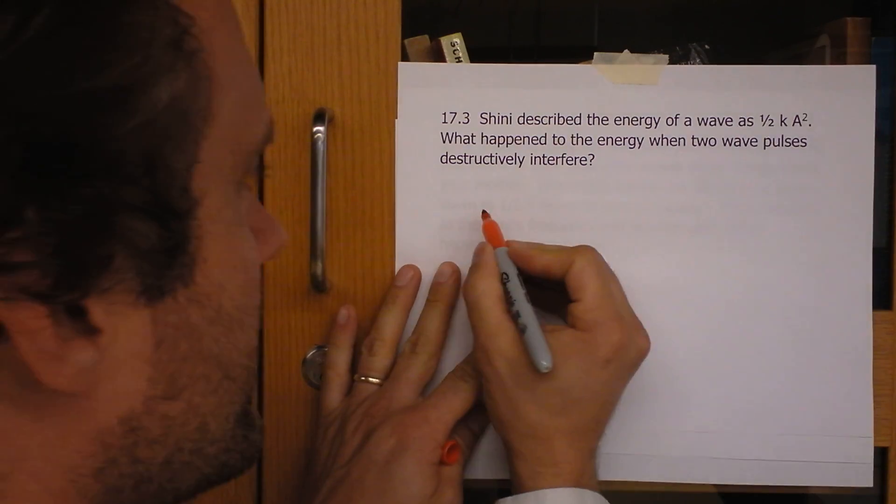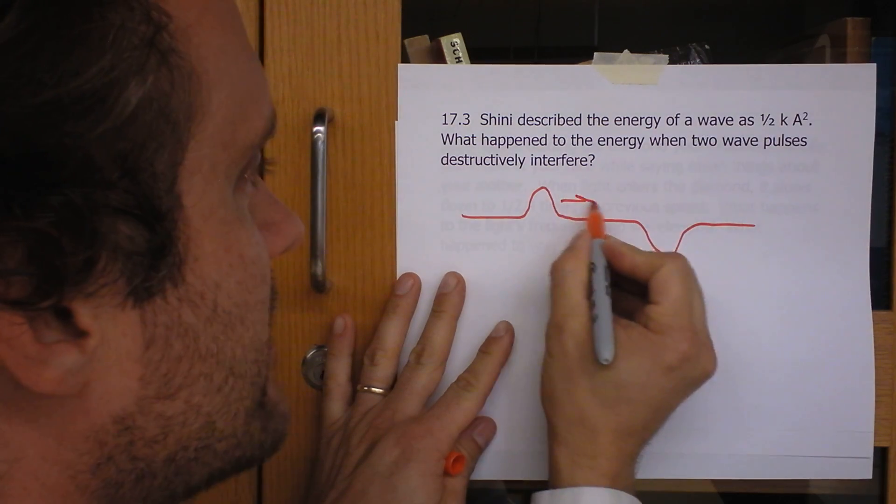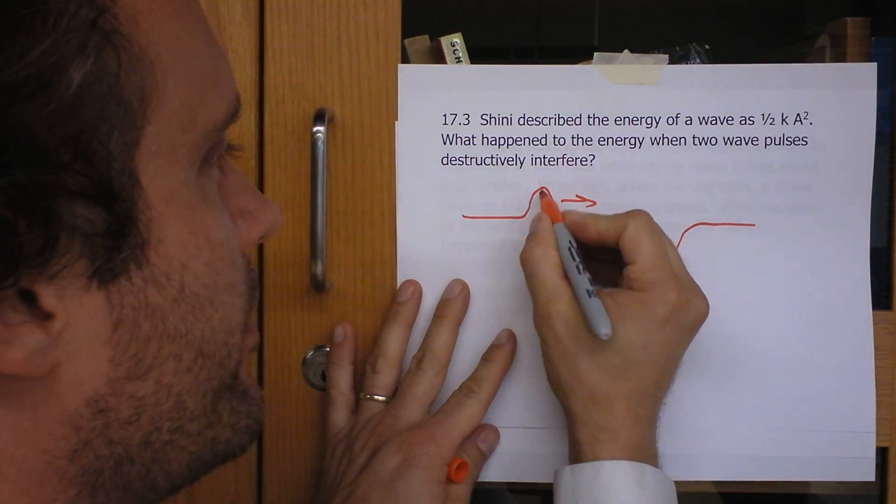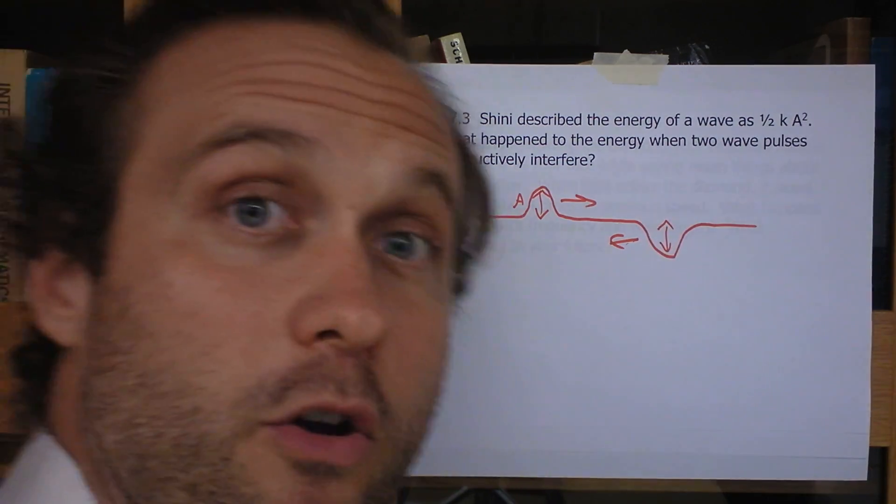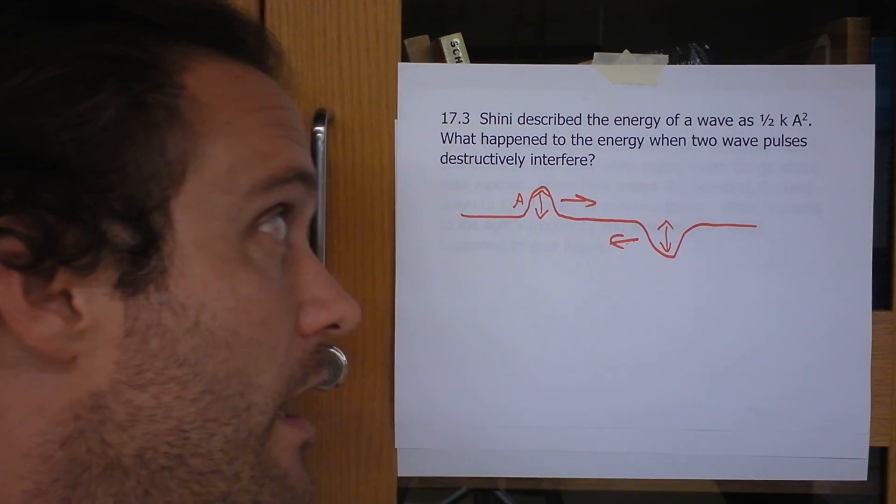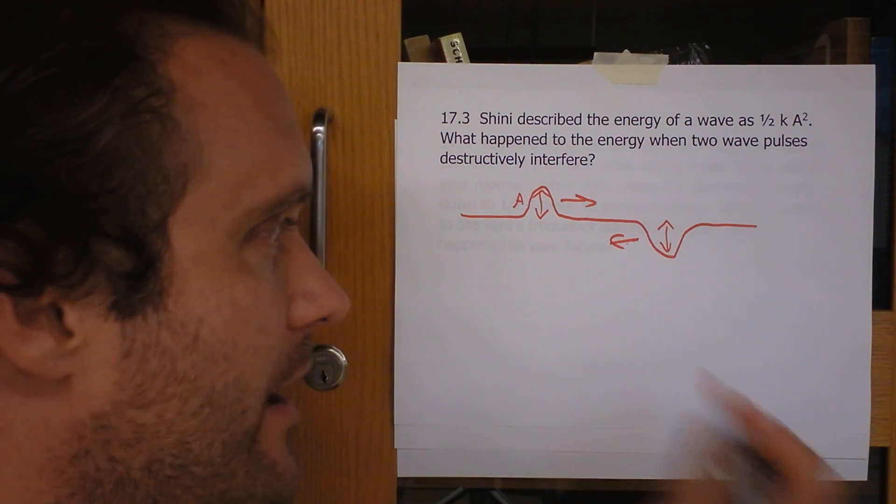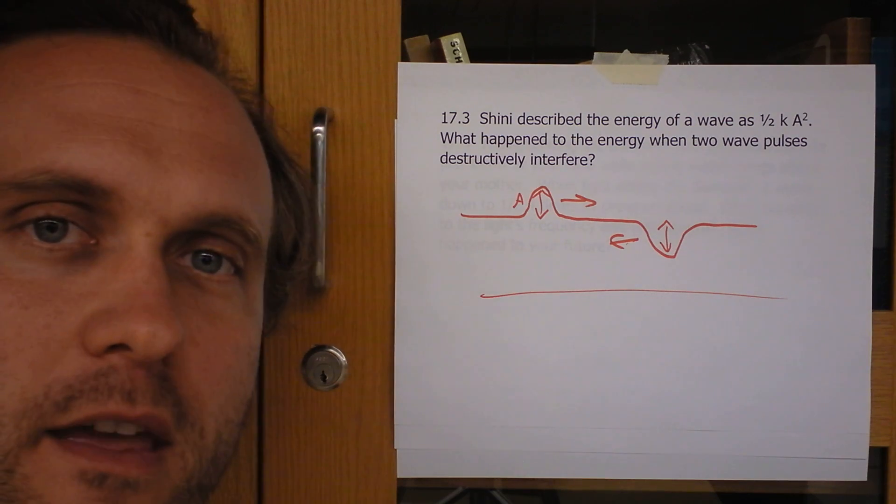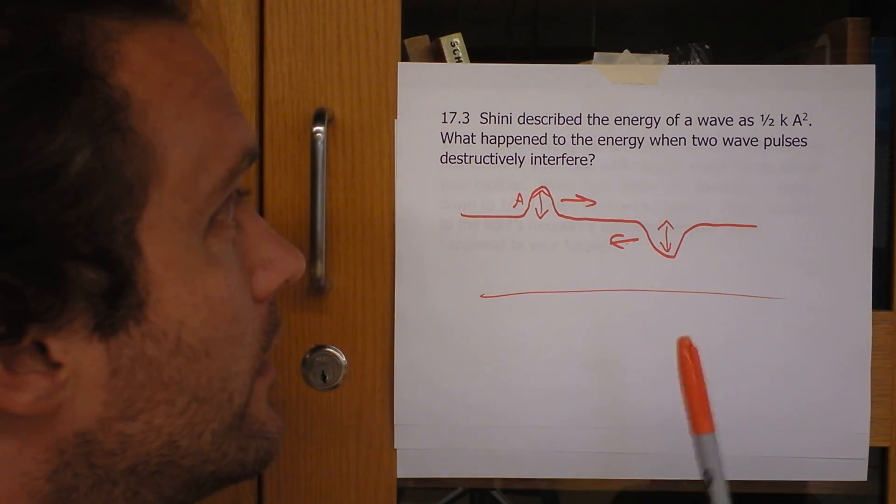So I'm speaking particularly about like a wave pulse that looks like this and a wave pulse that looks like this. Pretend those have the same amplitude and they are going to crash into one another. And at the moment that they crash, I'll just lead you in right here. At the moment that they crash, the rope is flat.